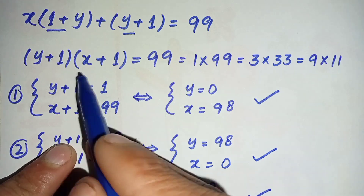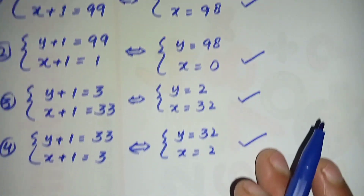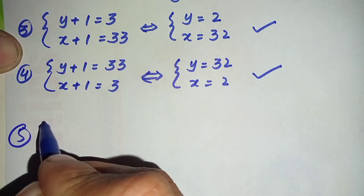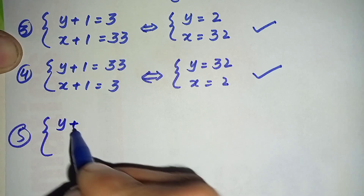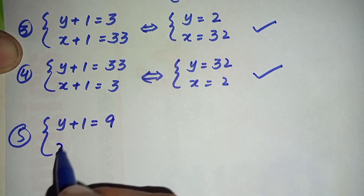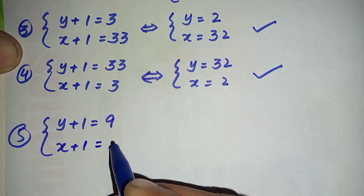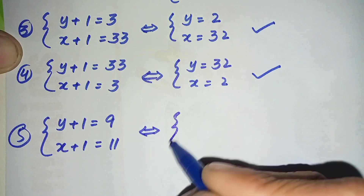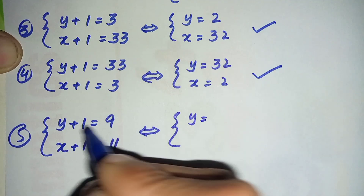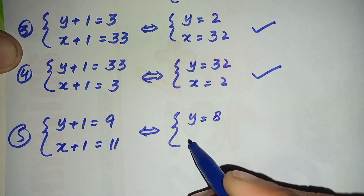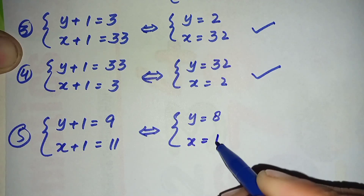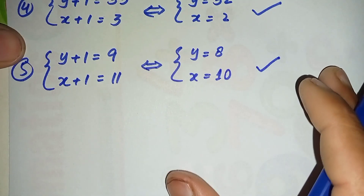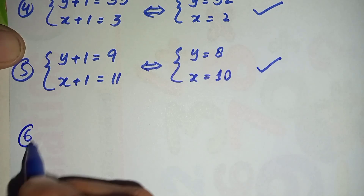For the fifth pair, we compare (y + 1) = 9 and (x + 1) = 11. So y = 9 − 1 = 8 and x = 11 − 1 = 10. This is our fifth pair of solutions: (x, y) = (10, 8).